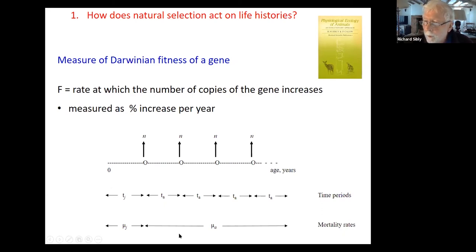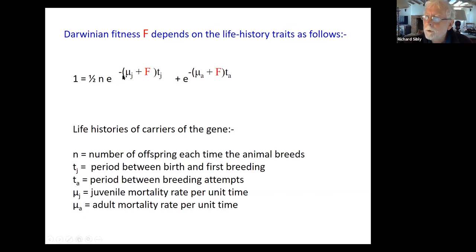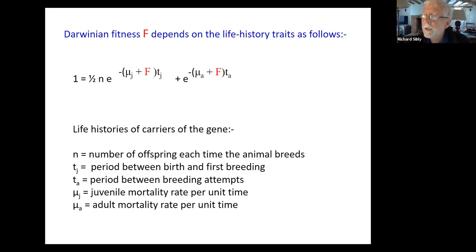Mortality rates in this simplified model: juveniles have a constant μJ mortality rate, and adults a constant μA mortality rate. This gives us the Euler-Lotka equation — a rather unpleasant equation — which shows, for this simplified life cycle, how Darwinian fitness F depends on all those properties of the carriers of the allele: n, μJ, TJ, and so on. It shows the dependence of fitness on these life history properties.